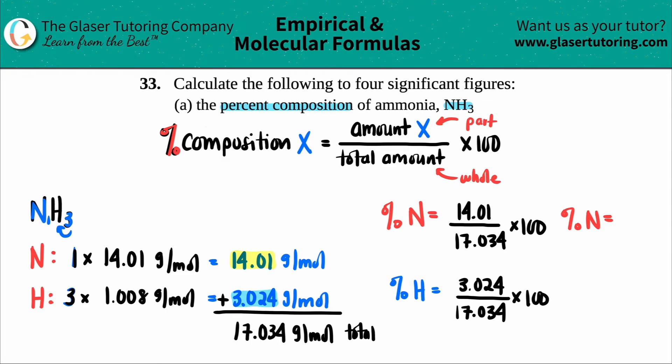So it would be 82.25%. I'll just bring this over because I know I'm getting a little bit close over there. Actually, yeah, that's fine. So 82.25 is the amount for nitrogen. That's the percent for nitrogen.